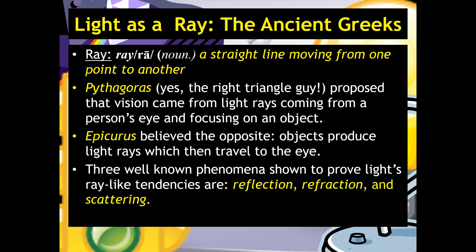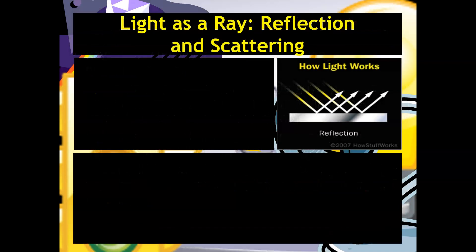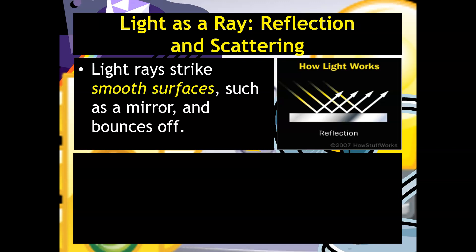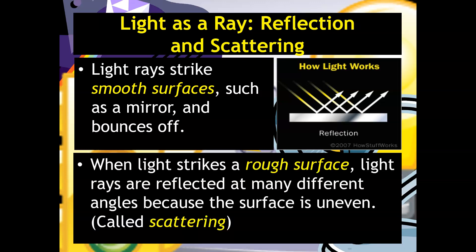There are three well-known phenomena shown to prove light's ray-like tendencies, and they are reflection, refraction, and scattering. So light as a ray in terms of reflection and scattering, well, light rays will strike smooth surfaces such as a mirror and bounce off. So we know that as reflection. And when light strikes a rough surface, like for example, your paper that you're writing on right now, light rays are reflected at many different angles because that surface is uneven. And this is what's called scattering.